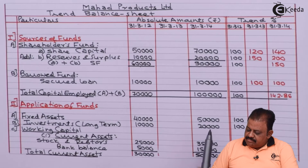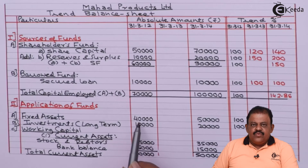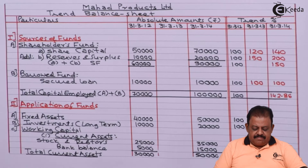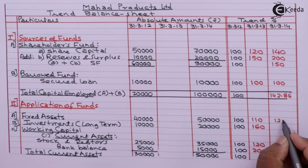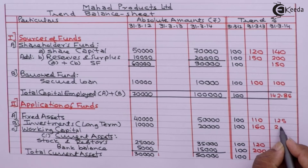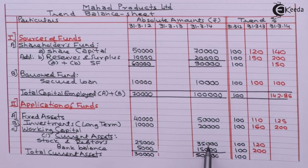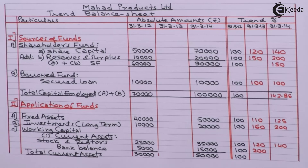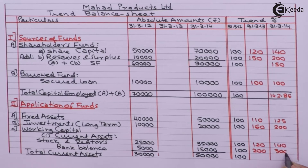Fixed assets: 50,000 divided by 40,000 multiplied by 100 equals 125%. Investments: 200. Stock and debtors: 35,000 divided by 25,000 multiplied by 100 equals 140. Bank balance: 15,000 divided by 5,000 multiplied by 100 equals 300.